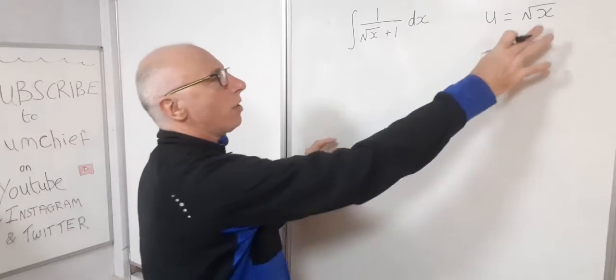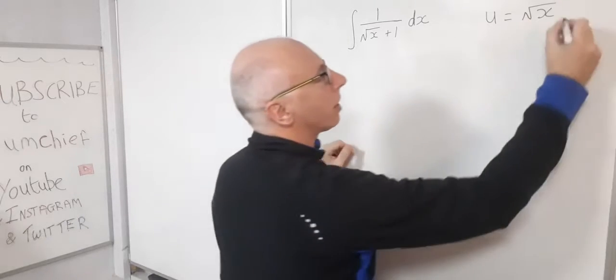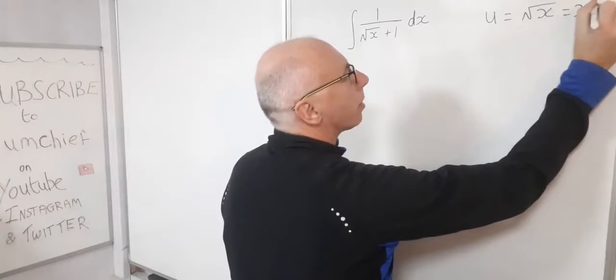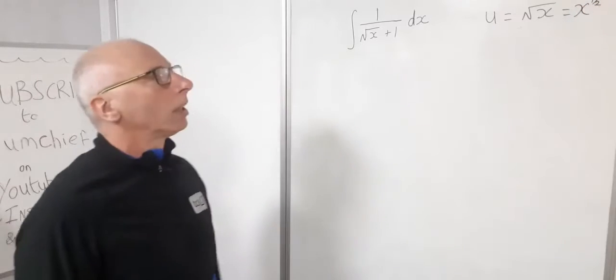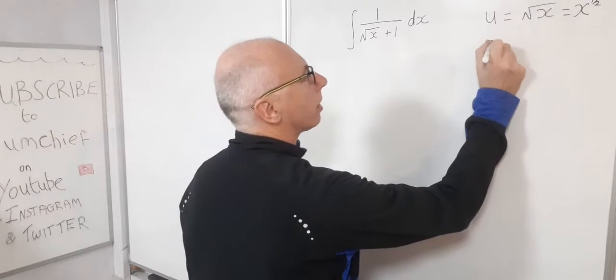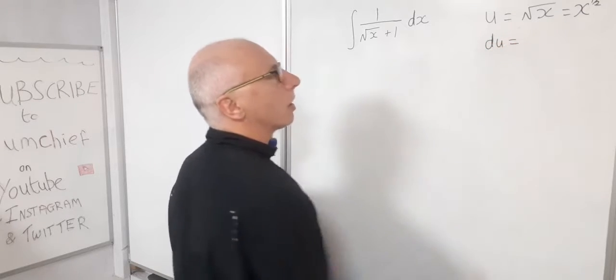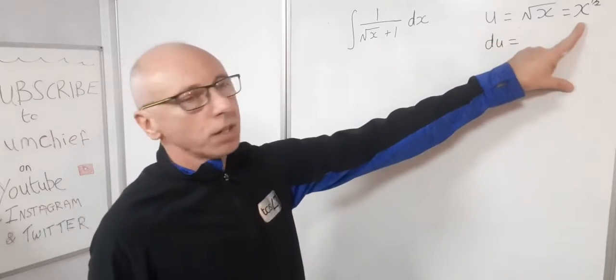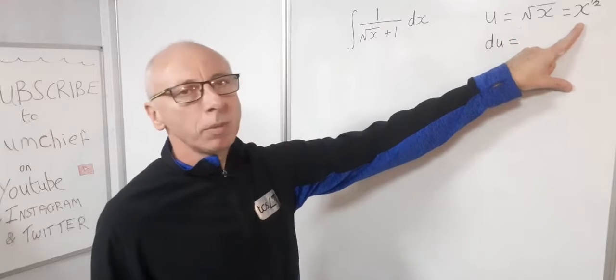So for square root of x I like to write this x to the power of a half. So now let's take the derivative on both sides. So du, using this term here x to the power of a half, remember the chain rule.